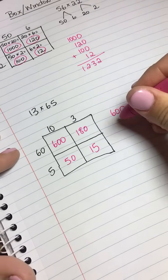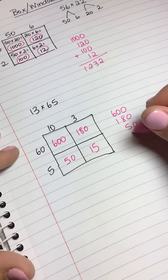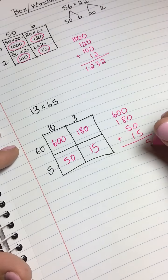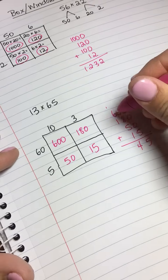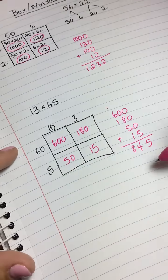Now we add all of those smaller products together. I like to start with the big ones and work our way down to the smaller ones, so we'll do 600 plus 180 plus 50 plus 15. Let's add all those together—that's 845. So the product of 13 and 65 is 845.